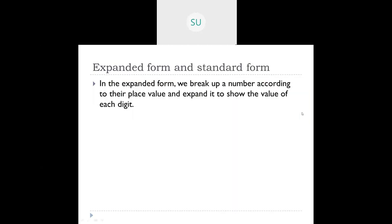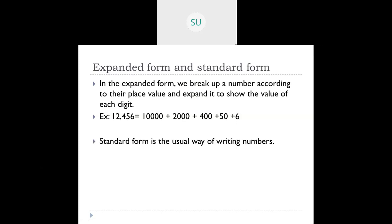In expanded form, we break up a number according to its place values and expand it as an addition statement, showing the value of each digit. For example, for 12456: ten thousand plus two thousand plus four hundred plus fifty plus six. Standard form is the usual way of writing numbers — if a number is given in expanded form, you add it all and write it as a whole number, like twenty four thousand three hundred and twenty five.